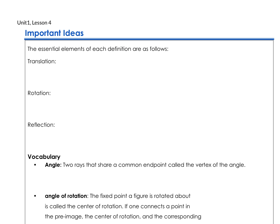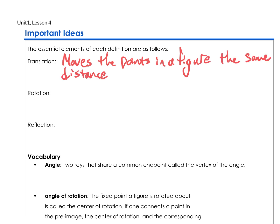A translation, which we've been working on, moves the points in a figure, and it moves them the same distance — they all move the same distance and in the same direction. Whether it's up 5 and right 3 or whatever direction it may be, they're going to move the same distance in the same direction.